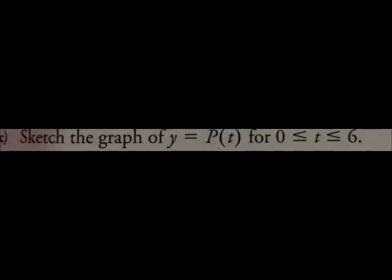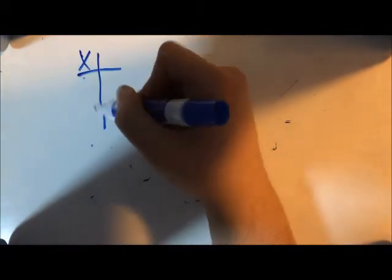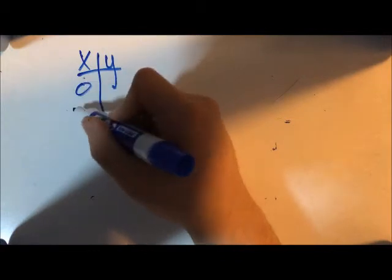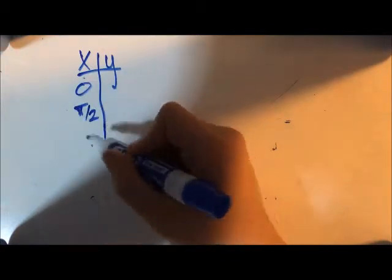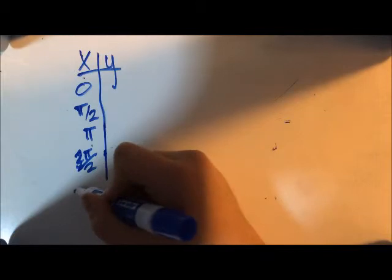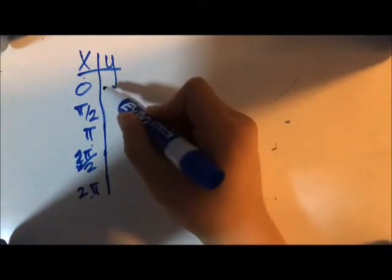Part c of the question asks: sketch the graph of y equals p of t, for t must be greater than or equal to 0, and less than or equal to 6. The first thing we have to do to sketch this graph is to create a table for the x and y coordinates of a base cosine graph. Then we apply the transformations to the x and y coordinate.